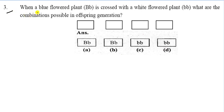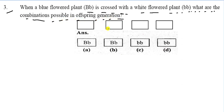Question: When a blue flower plant (capital B, small b) is crossed with a white flower plant (small b, small b), what are the combinations possible in the offspring generation? The possible combinations are: capital B small b, capital B small b, small b small b, and small b small b.